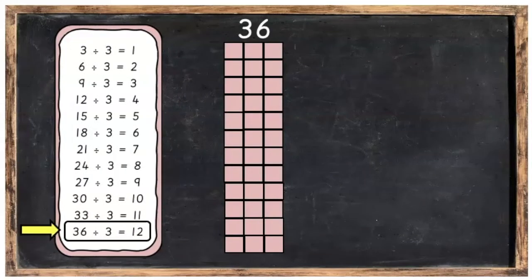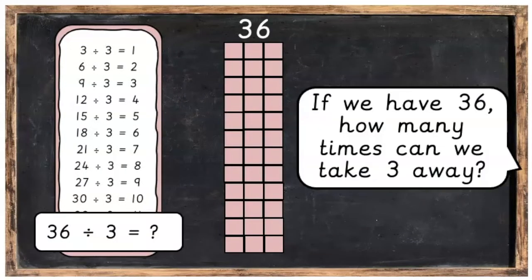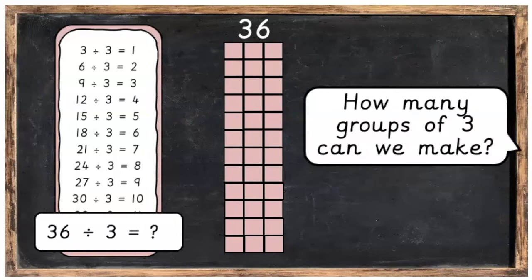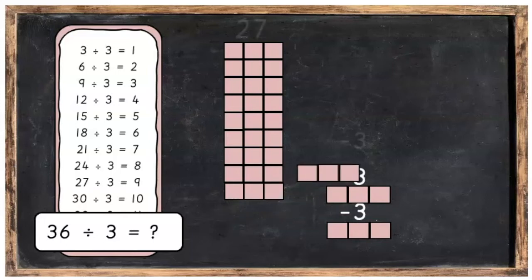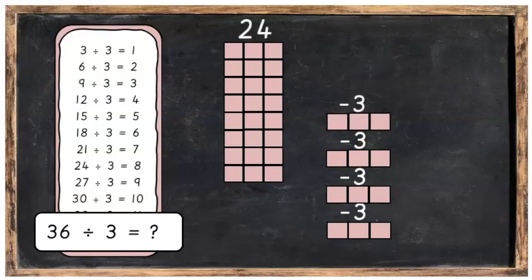So if we start with the number 36, how many times can we take 3 away? Or how many groups of 3 can we make? Well, here's a 3. Take away another 3, we'll have 30 left. Take away another 3, we're going to have 27 left. Take away another 3, we're going to have 24 left.